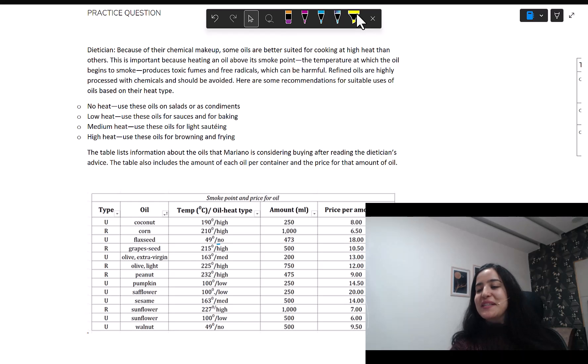I hope you read. So, what is the situation about? There is something that a dietitian is saying. The dietitian is saying that some oils are better suited for cooking at high heat than others. So, depending on the heat that you have to give to your food, the heat required to cook something, that's how you should decide which oil you will go for.